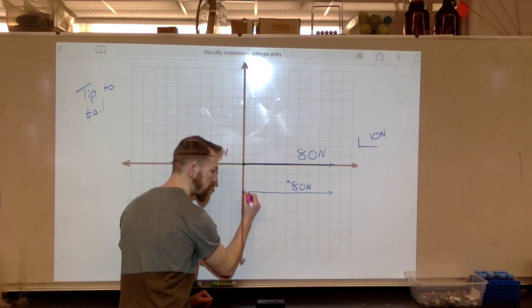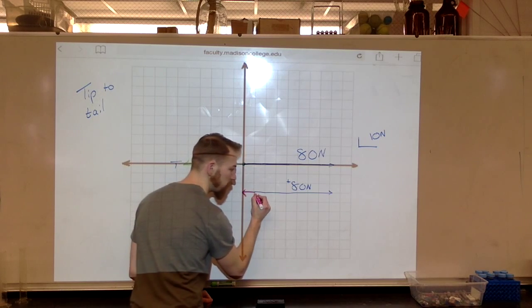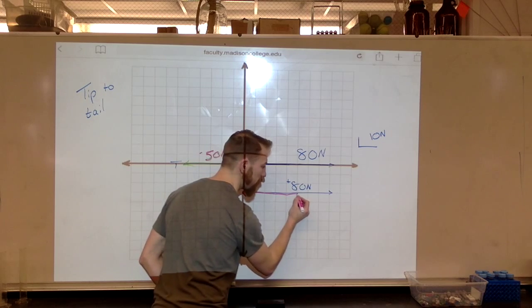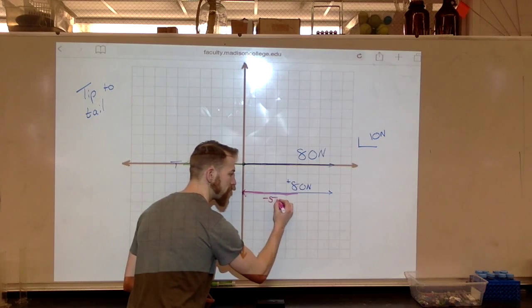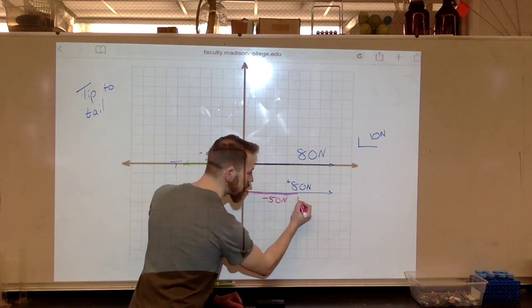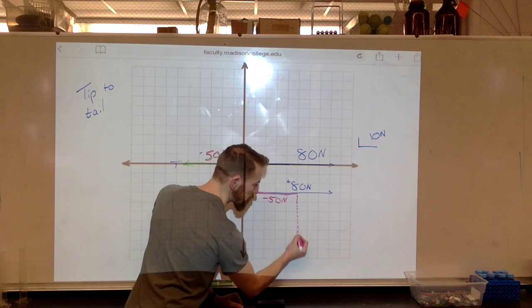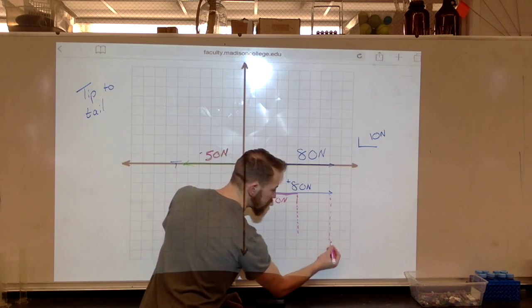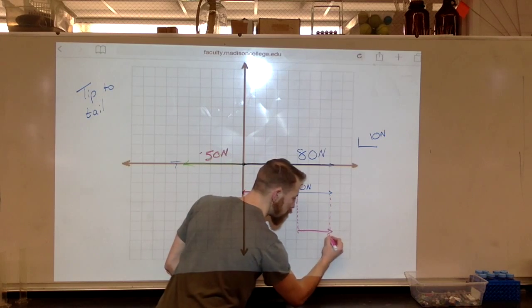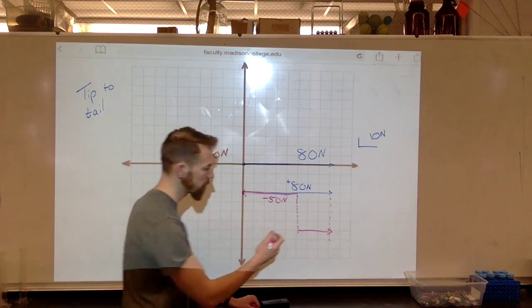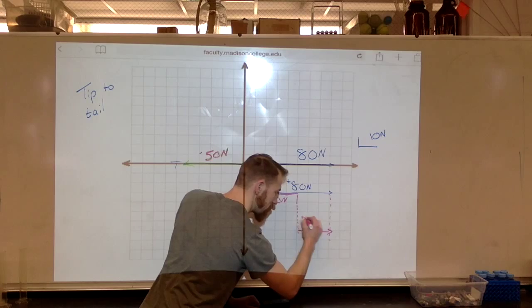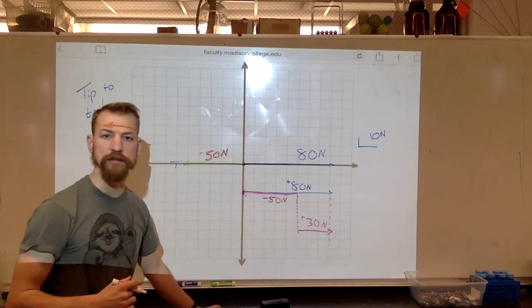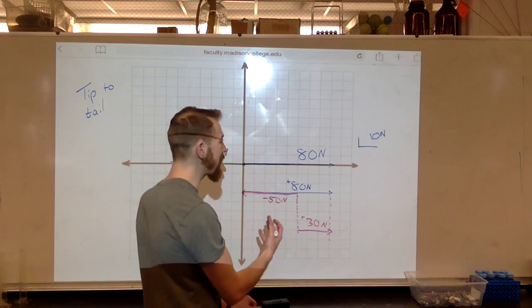And if I draw my negative 50 tip to tail, here is my tip. 1, 2, 3, 4, 5. This is negative 50 newtons. We can see that this remainder, this vector that's left over, this resultant is 1, 2, 3, in the positive direction, 30 newtons.